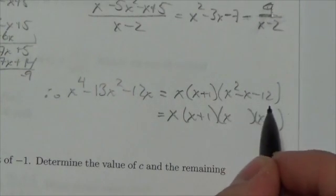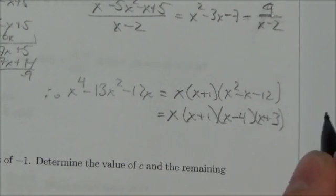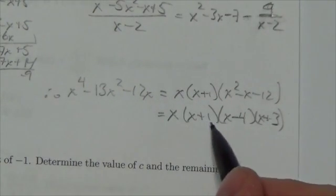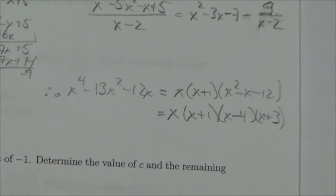x and x and factors of negative 12 that add to negative 1 will be negative 4 and then positive 3. And so there we go. x times (x + 1) times (x - 4) times (x + 3). That's the factored form of this expression.